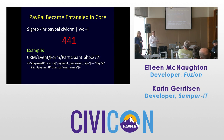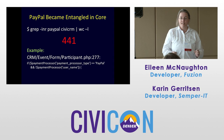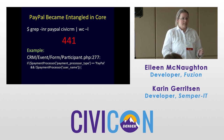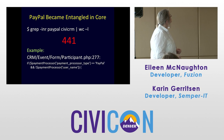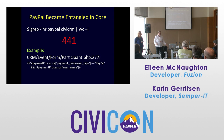PayPal became entangled in core. This is a grep on 4.4 — I've got 441 references. The word PayPal occurs 441 times in CiviCRM 4.4. For example, if we're on the event form doing something with a participant registration, we want to know if we're using PayPal on a form.